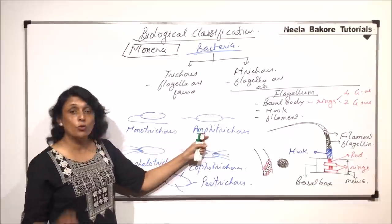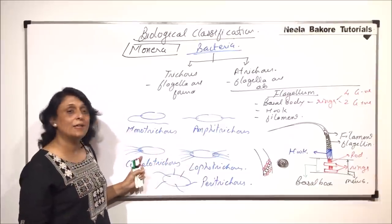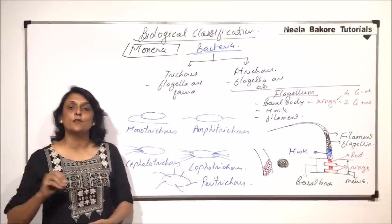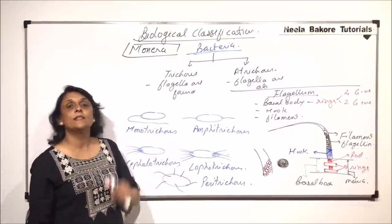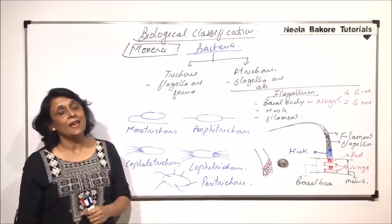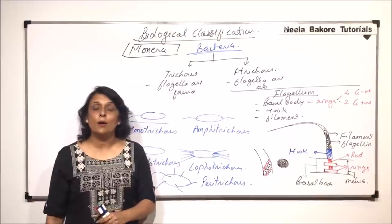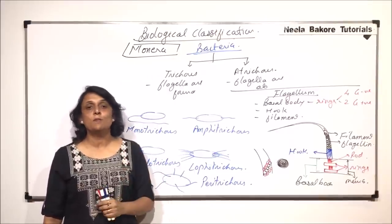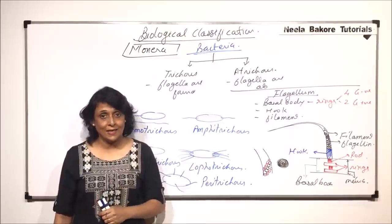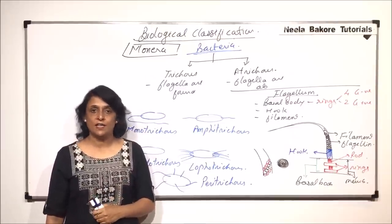So: single flagellum, two flagella at two ends, many at one end, clusters at two ends, and peripheral distribution. On the basis of presence or absence of flagella, we can classify these bacteria. In the next part, we'll talk about identifying these bacteria on the basis of gram staining — gram-positive and gram-negative bacteria.